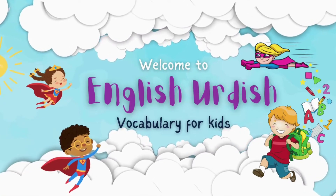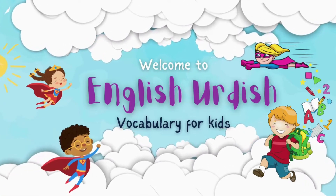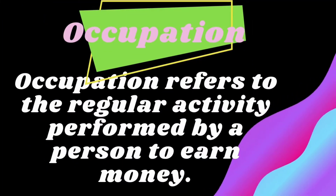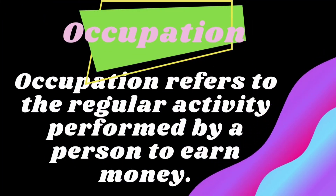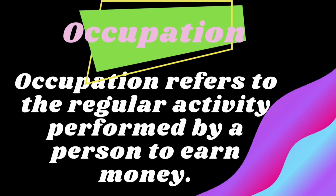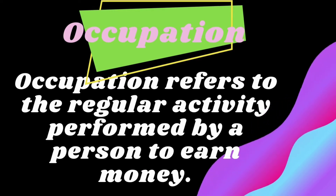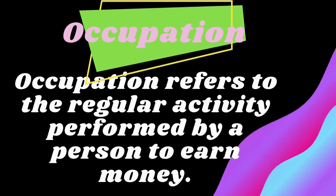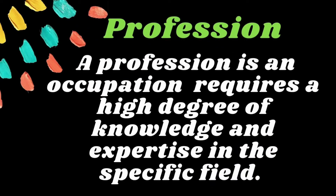Vocabulary for Kids: Occupation and Profession. Occupation refers to the regular activity performed by a person to earn money. Profession is an occupation that requires a high degree of knowledge and expertise in a specific field.